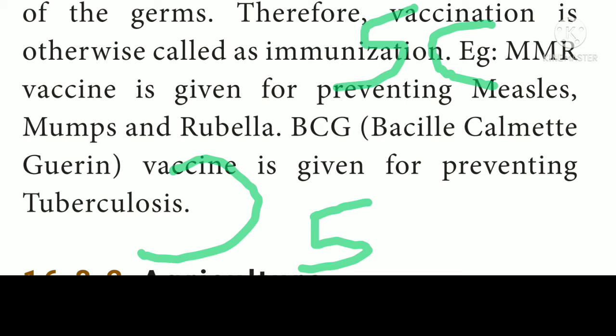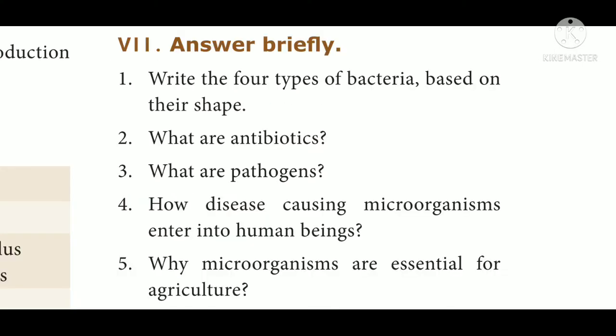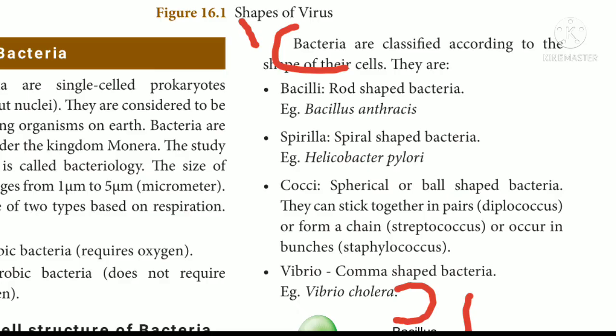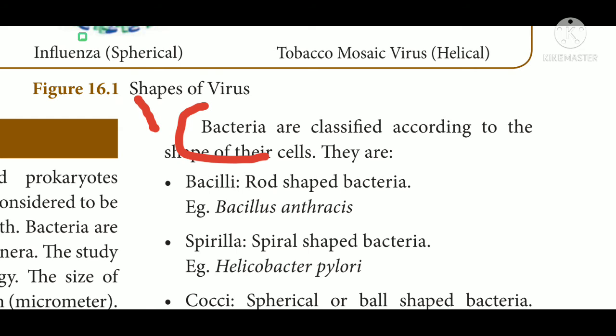Roman numeral 7, Answer briefly. Question 1: Write the 4 types of bacteria based on their shape. Answer: Bacilli — rod shaped bacteria, e.g. Bacillus anthracis.